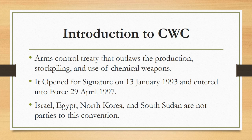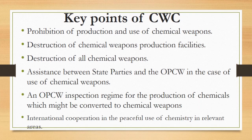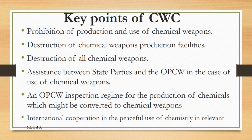Now, key points of CWC. The first key point is prohibition of production and use of chemical weapons, which means this convention completely bans the parties from producing or using chemical weapons. The second key point is destruction of chemical weapons production facilities — the convention asks parties to destroy their chemical weapons production facilities so that they may never be able to produce these weapons again.